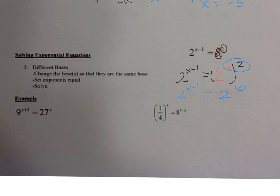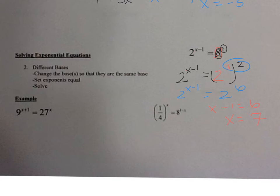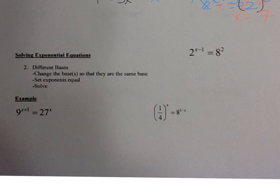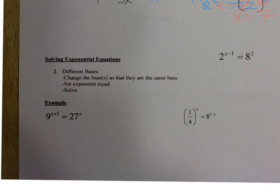Now I have the same base — they're both base 2. So I set the exponents equal: x minus 1 equals 6, so x equals 7. Sometimes you'll have to change both bases. Take a look at the next one: 9 to the x plus 1 equals 27 to the x power.